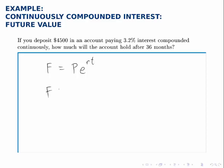We simply plug everything into the formula. The present value, the amount we have today, is $4,500. Then we have e to the 0.032, that's our interest rate, times 3 years. So don't be tripped up by the 36 months, that's just 3 years.